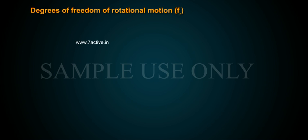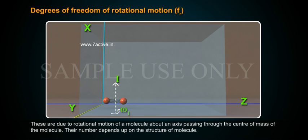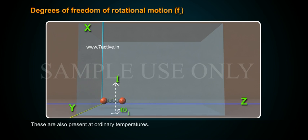Degrees of freedom of rotational motion: These are due to rotational motion of a molecule about an axis passing through the center of mass of the molecule. Their number depends upon the structure of the molecule. These are also present at ordinary temperatures.